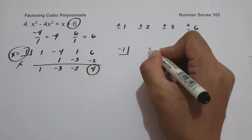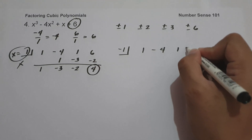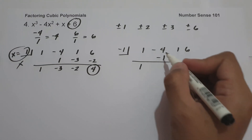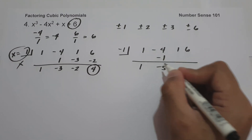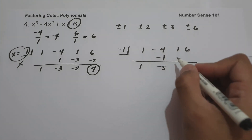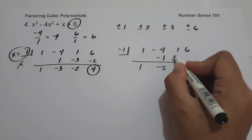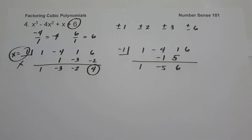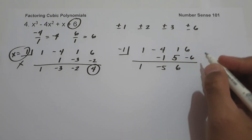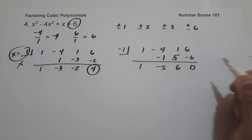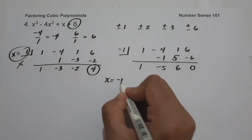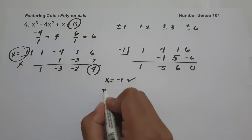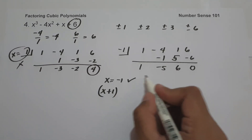Let us try negative 1. Coefficients: 1, negative 4, 1, and 6. Bring down 1. 1 times negative 1 is negative 1. Negative 4 plus negative 1 is negative 5. Negative 5 times negative 1 is positive 5. 1 plus 5 is 6. 6 times negative 1 is negative 6. 6 plus negative 6 is 0. Since the remainder is 0, x equals negative 1 is included in our solution. Written in factored form, this gives us x plus 1.